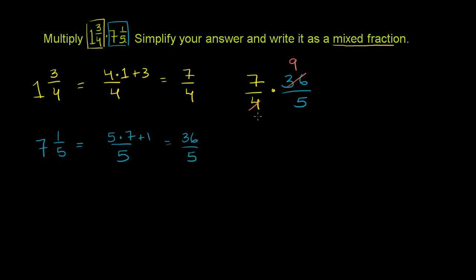So 4 divided by 4 is 1. So now this becomes 7 times 9. And what's 7 times 9? It's 63 over 1 times 5, over 5.